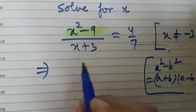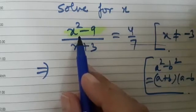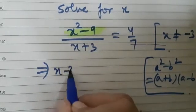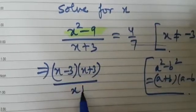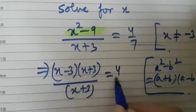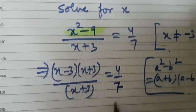So what will be the numerator here on the left side? Yes, it will be x minus 3 into x plus 3, and the denominator is x plus 3, which equals the right hand side, 4 by 7.